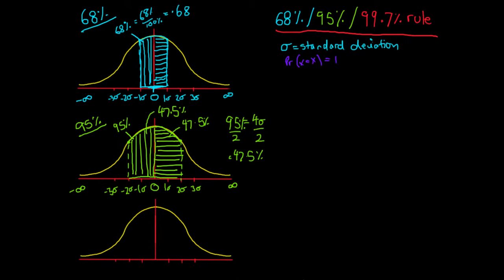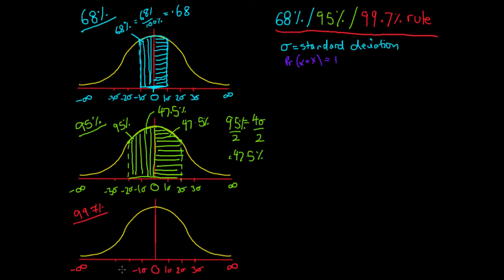We can then look at our 99.7% rule, which is very similar to the first two rules. We have a mean at 0; to the right, numbers go to positive infinity, and to the left, toward negative infinity. So standard deviations on the right are positive — one, two, and three — and on the left they are negative: negative one, negative two, and negative three standard deviations.